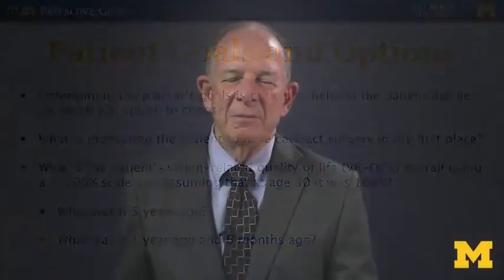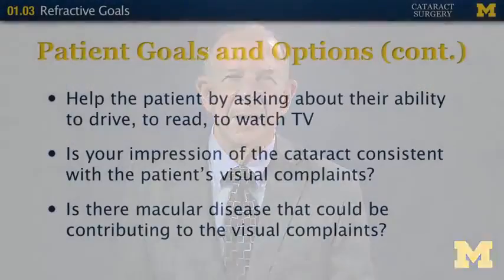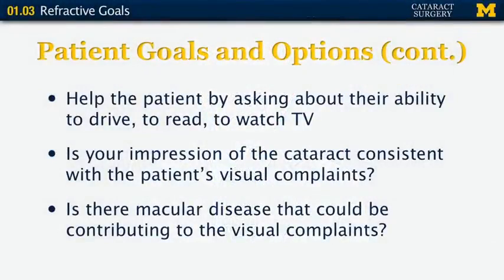Maybe they'd say 80%. What was it six months ago? Maybe 70%. And we find out what it is today. We use that in the discussion with the patient to decide on which lens is best for them. We ask them a number of other questions, like what's their ability to drive, to read, to watch TV, and do other things important to them. Is our impression of the cataract at the slit lamp consistent with the patient's visual complaints? Is there macular disease contributing to those complaints?